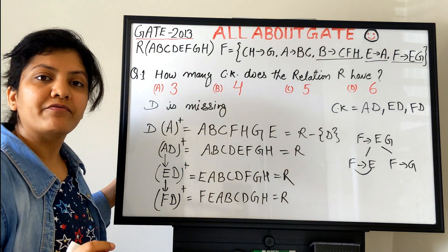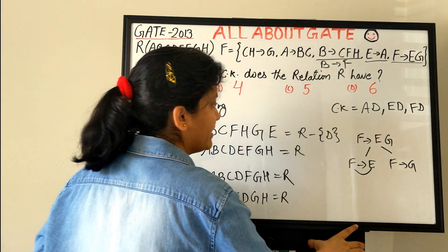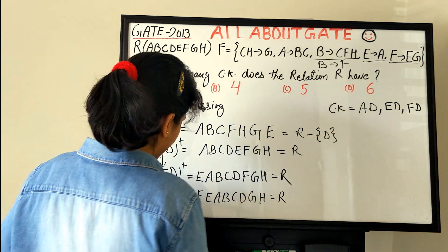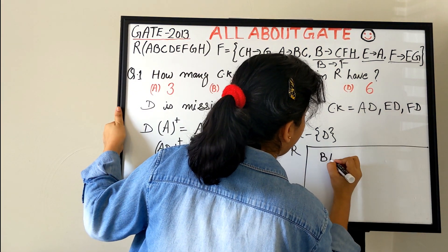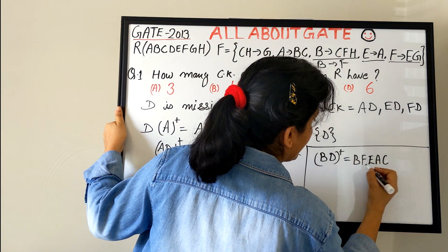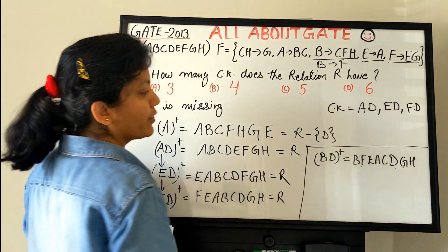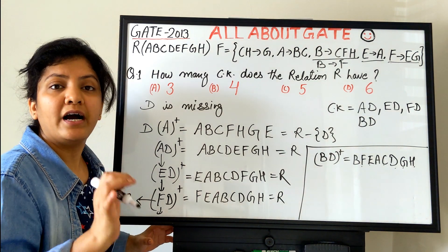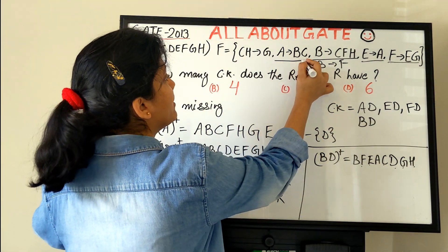Next, check if F is determined by anything. The FD B→CFH (by decomposition) contains B→F, meaning F can be replaced by B. Computing BD+: B determines F, E, A, C, D, G, H — we get A, B, C, D, E, F, G, H, the complete R. Therefore BD is also a candidate key.